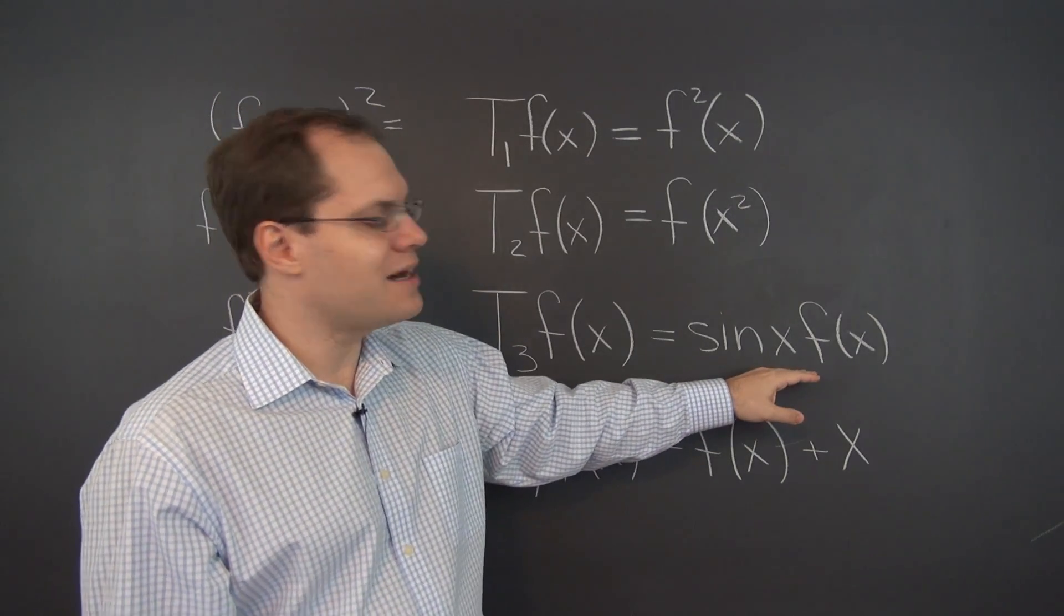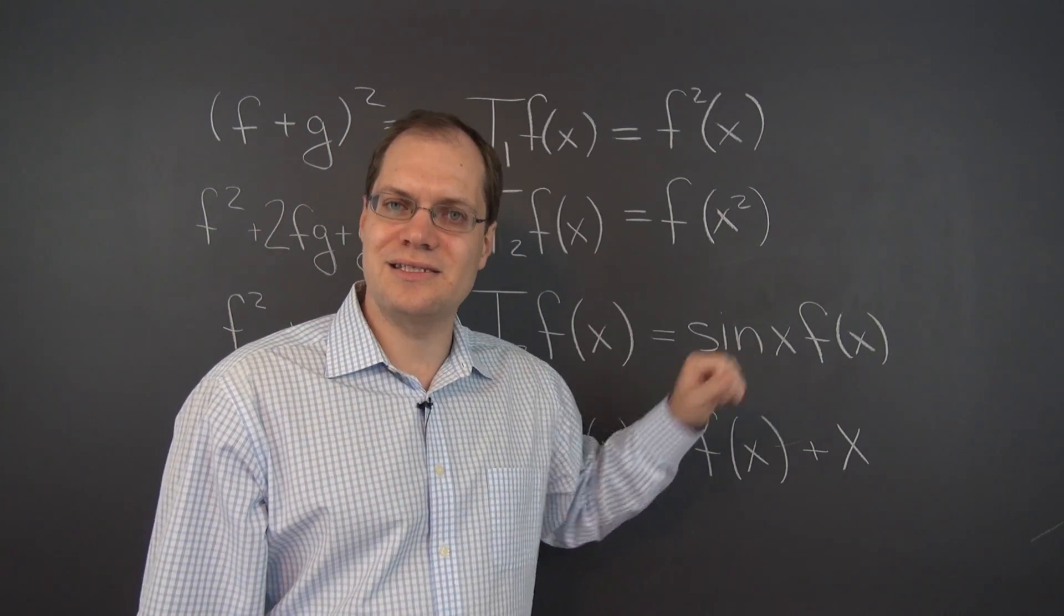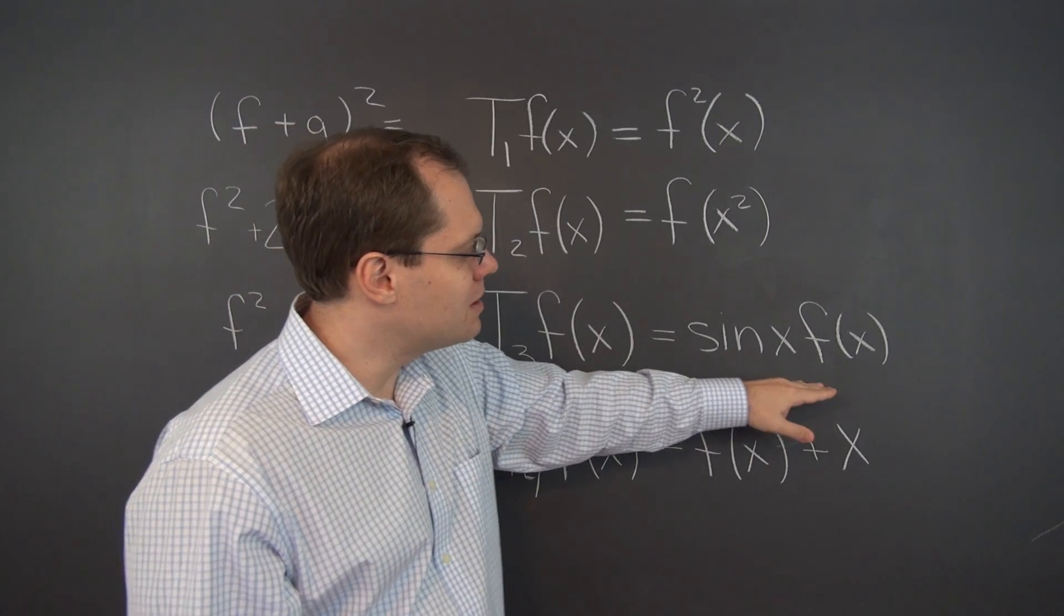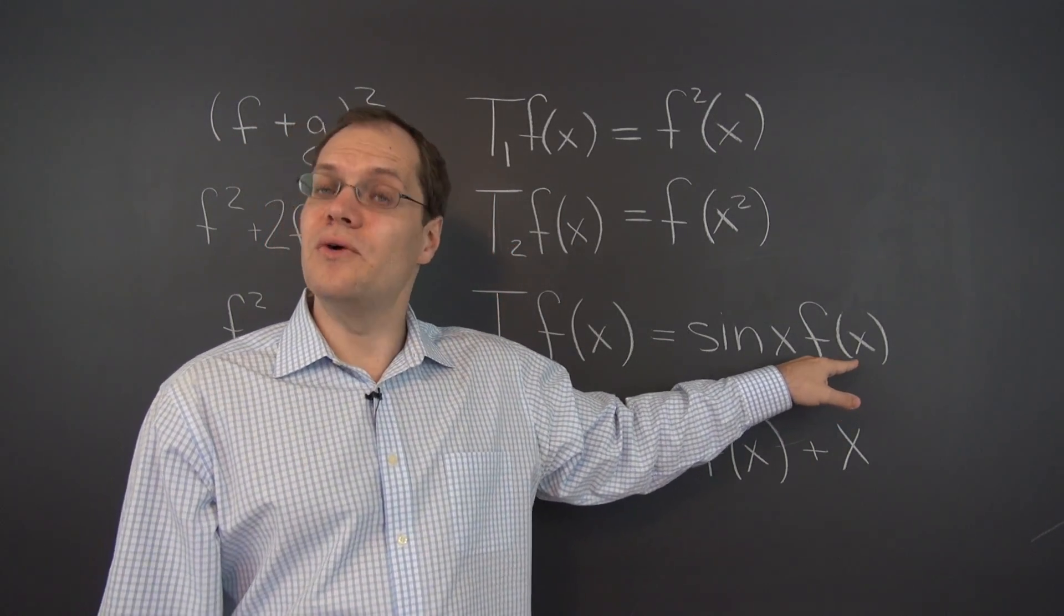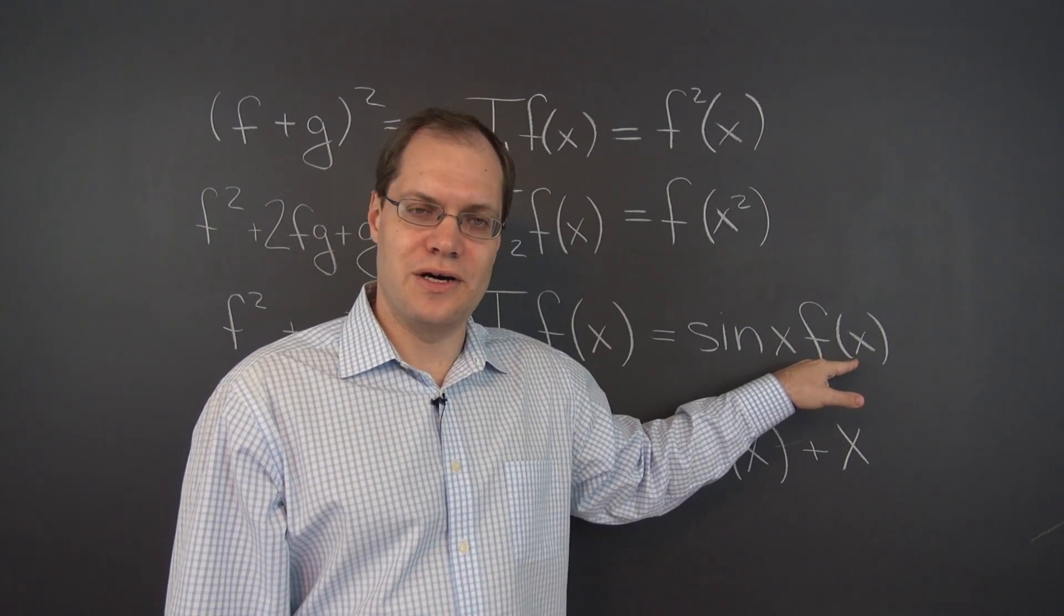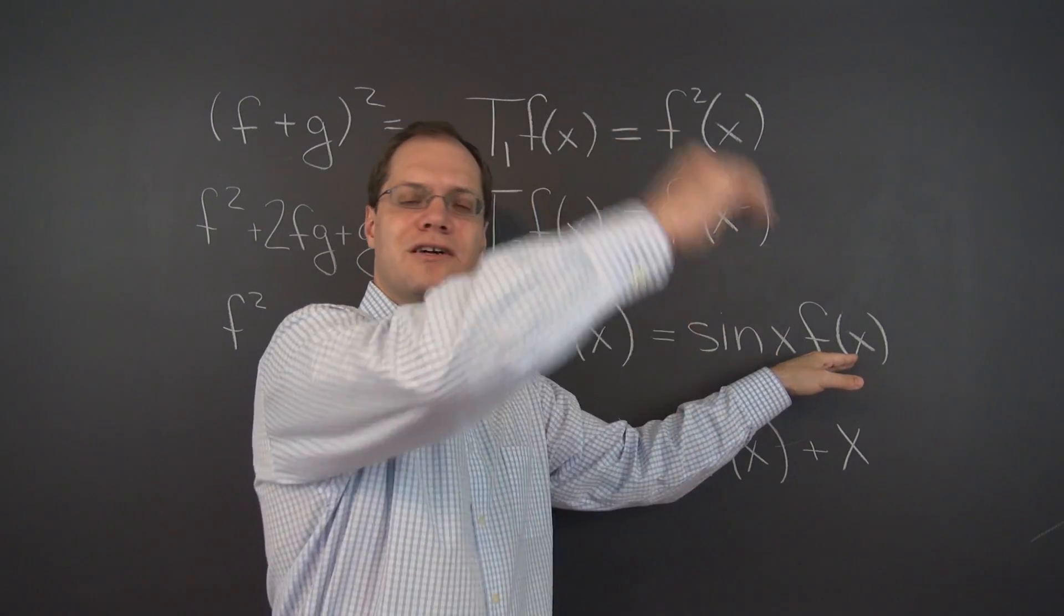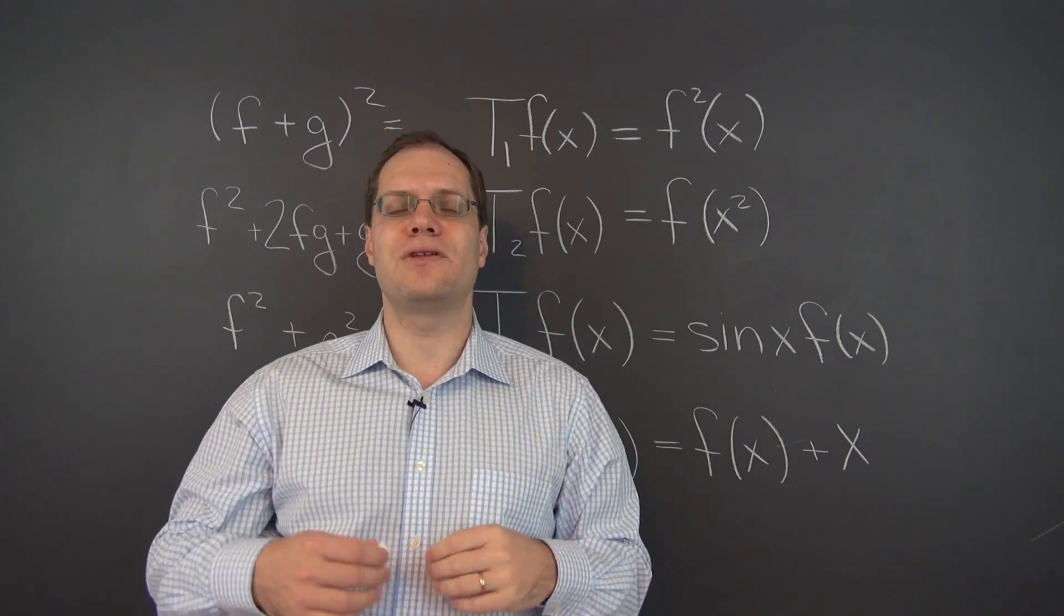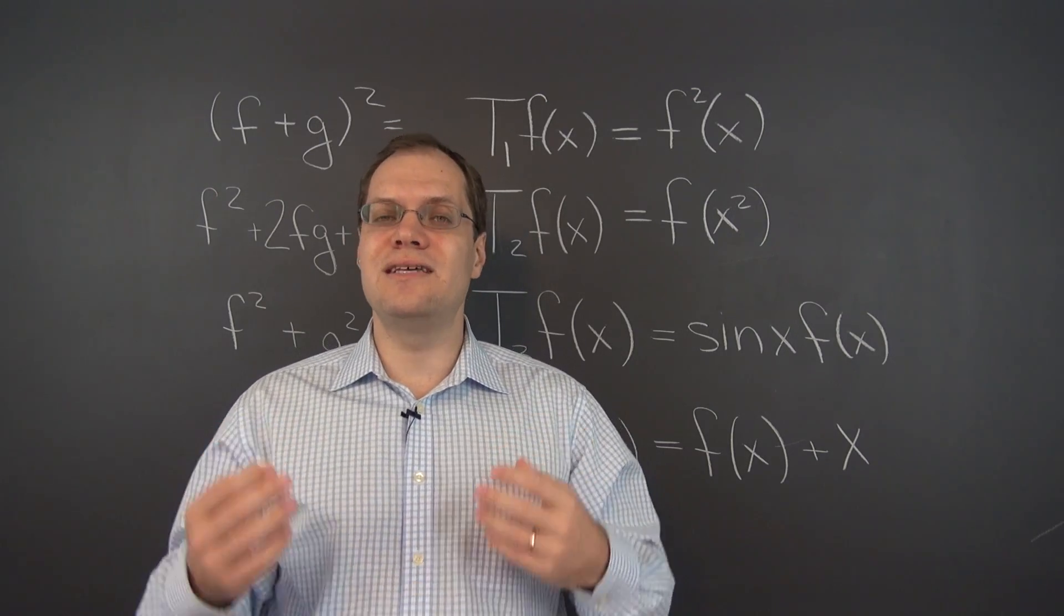Well there's something very non-linear looking about this transformation as well, and that's sine of x. But you have to realize that just multiplying a function by sine of x, once again transforms the function quite a bit, would turn x squared into huge wiggles for which x squared is merely the envelope. So it does something very dramatic to a function. But that transformation is still linear.